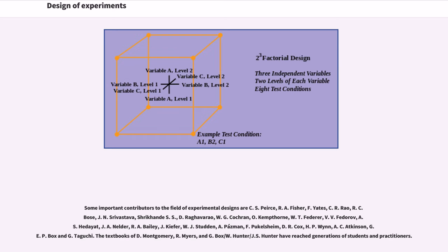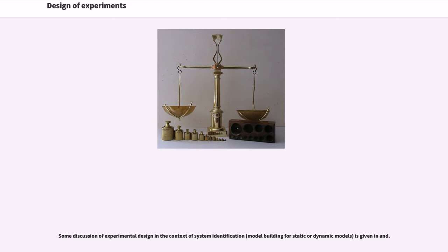The textbooks of D. Montgomery, R. Myers, and G. Box/W. Hunter/J.S. Hunter have reached generations of students and practitioners. Some discussion of experimental design in the context of system identification, model building for static or dynamic models, is given in various sources.